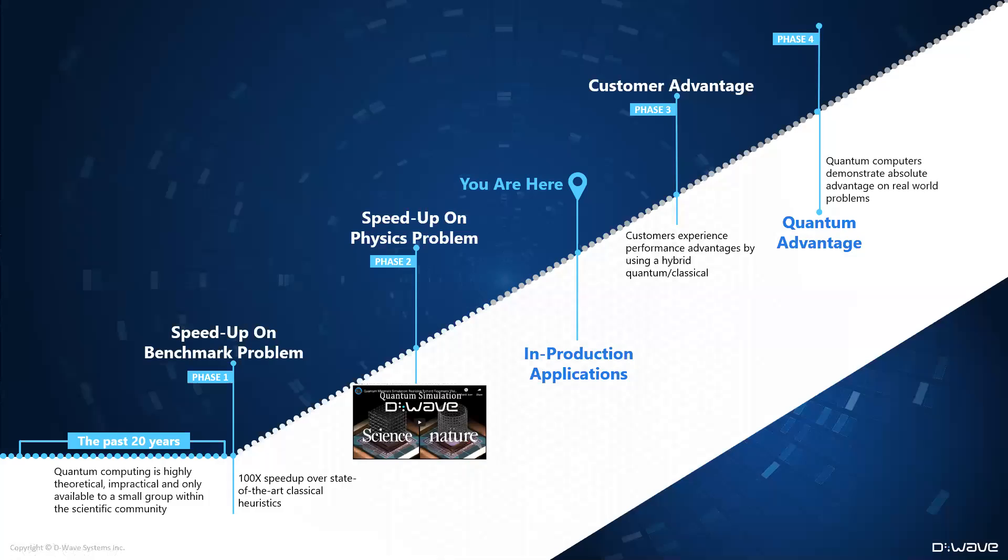Over the past 20 years, there has been a lot of science. We have demonstrated a speed-up on specific benchmark problems. Recently, we have shown results that simulation of some physical systems and materials can be done much faster by quantum annealing. In particular, it can be up to a million times faster. The results are published in peer-reviewed journals such as Science and Nature. Very recently, we have shown the value of using hybrid methods for early commercial applications, and our goal for the near future is to demonstrate the advantage of hybrid computing and quantum annealing computing for customers.